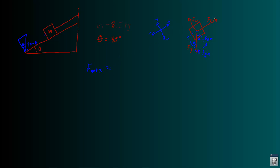And let's define some directions real quick, just to keep consistent. This is the positive direction, negative direction in terms of what we're calling X. And this is the positive direction and the negative direction in terms of what we're calling Y.